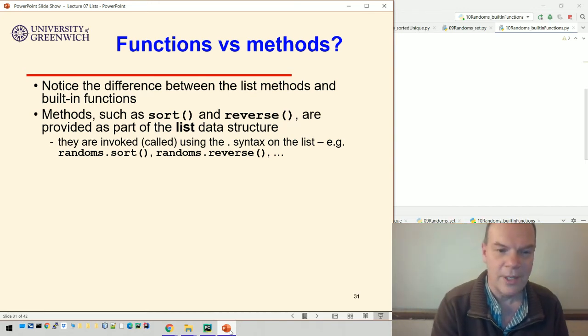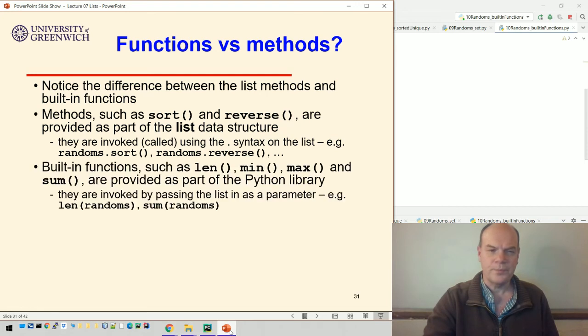But if we create a data structure like a list, or I mean that's being created for us, then you can use this dot notation, randoms.sort() or randoms.reverse(). So it takes the object, takes the list in this case and sorts it or reverses it. So it's applying, it's part of the list data structure itself.